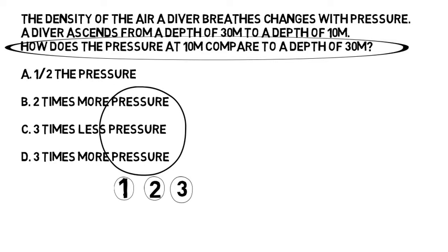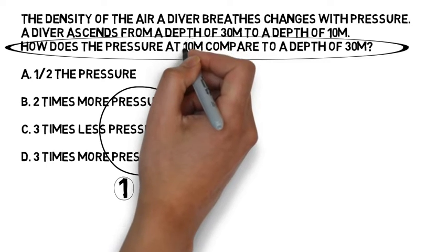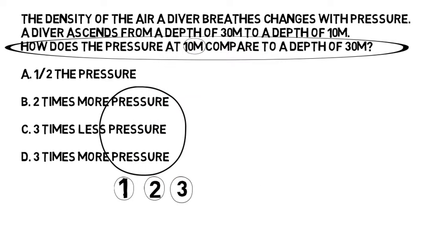The first step is to ask ourself, what pressure are we at according to the question? Well, the pressure we are at according to the final sentence of this question is 10 meters. What is the pressure at 10 meters in atmospheres? It's two atmospheres. So under step number one, I'm going to write the number two.